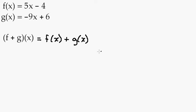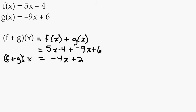So all we really have to do to find the function f plus g of x, this is going to make a new function, is to simply add f of x, which is 5x minus 4, plus g of x, which is negative 9x plus 6. And we'll combine our like terms and get negative 4x plus 2. So we get f plus g of x is this new function, negative 4x plus 2.